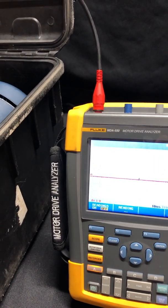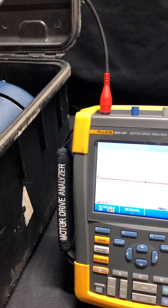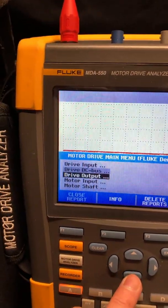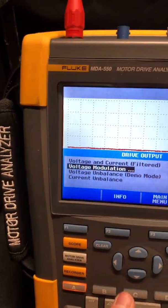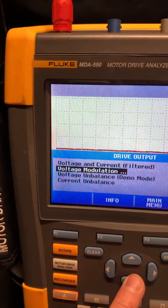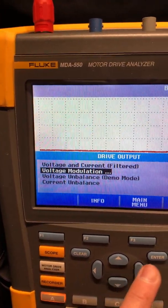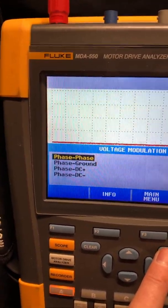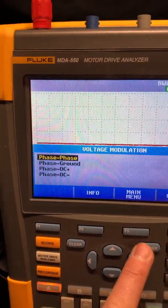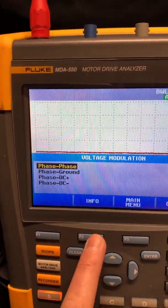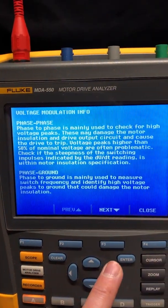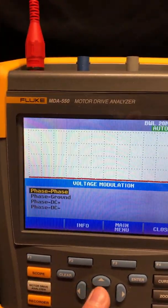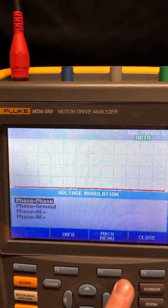To perform this test, simply press the motor drive analyzer button on the MDA 550, scroll down to drive output, select enter. Now we want to go down to the voltage modulation menu because that's what we want to look at, the pulse width modulation. And we'll go ahead and do a phase-to-phase test. If you want to refresh your knowledge before you take this test, by pressing F2, there's going to be a really good detailed write-up on what you're looking for. You can familiarize yourself with what you're looking for before you take the test.